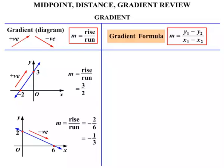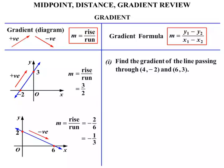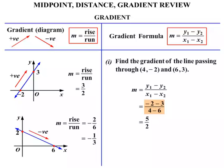Now let's use the gradient formula. We're asked to find the gradient of the line passing through the points (4, -2) and (6, 3). Writing the formula: M equals (Y1 minus Y2) over (X1 minus X2). The Y values are -2 and 3, so we write (-2 minus 3) over (4 minus 6). That simplifies to 5 over 2. Note that often we write the gradient as an improper fraction, so 5 over 2 rather than 2.5 or 2 and a half.